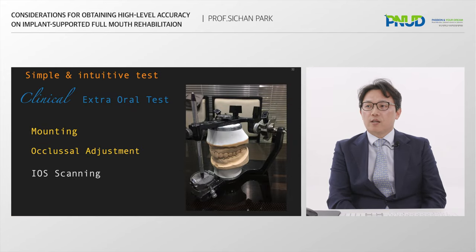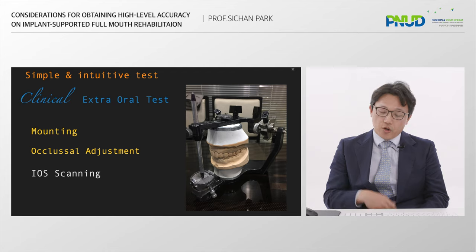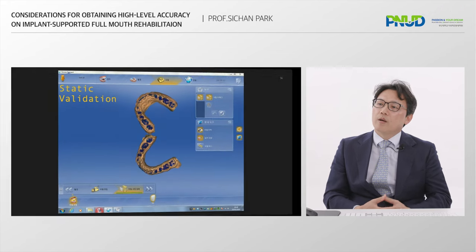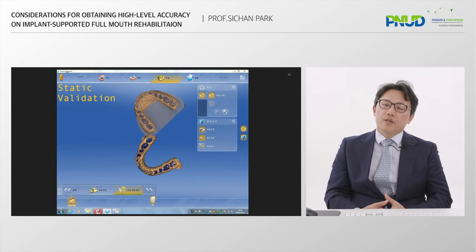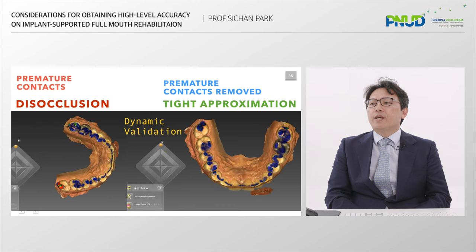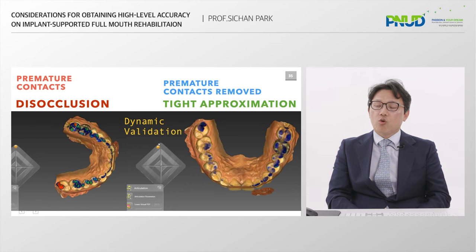If you want to inspect whether your scan is correct, one problem is that professional software is too difficult to use. I suggest this simplified, intuitive model: a mounted model in an articulator. Before scanning, you can make some contact points. After scanning, you can easily find contact loss or distortion. If it fails, please try calibration or call technical service. Dynamic contact validation using a virtual articulator is also very important, especially in fully edentulous cases — checking guided movement design in the virtual articulator is critical.